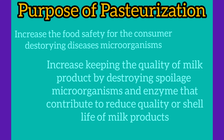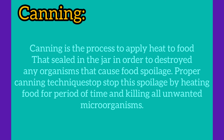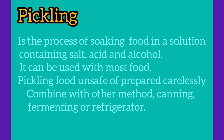The third method is canning. Canning is the process of applying heat to food sealed in a jar in order to destroy any organisms that can cause food spoilage. Proper canning techniques stop spoilage by heating the food for a specific period of time and killing unwanted microorganisms. During the canning process, air is driven from the jar and a vacuum is formed as the jar cools and seals.